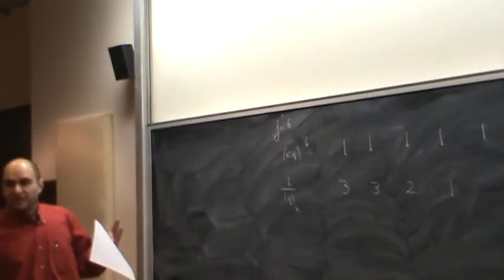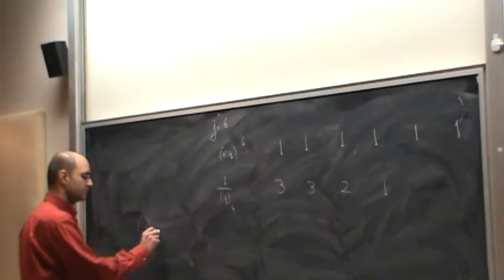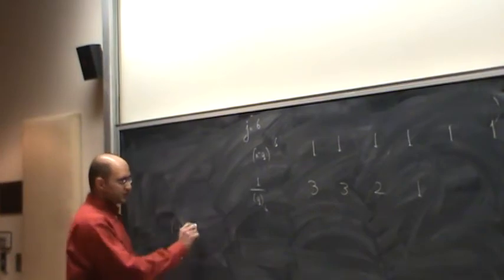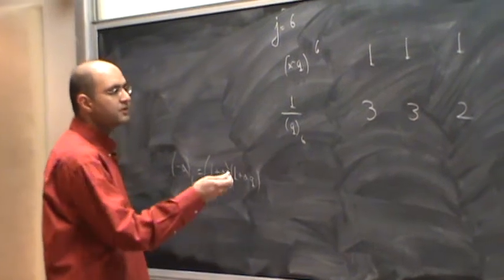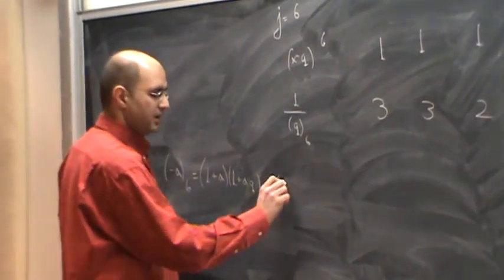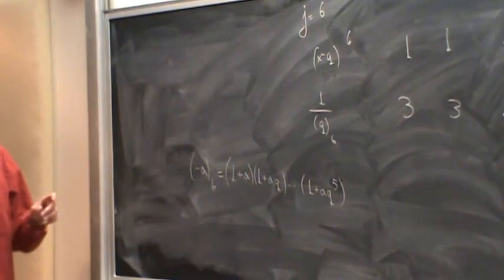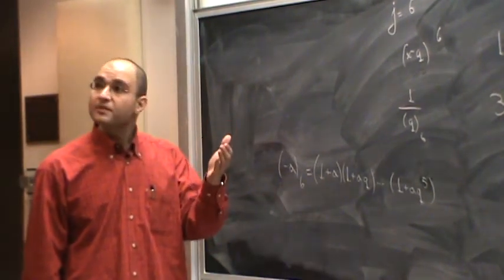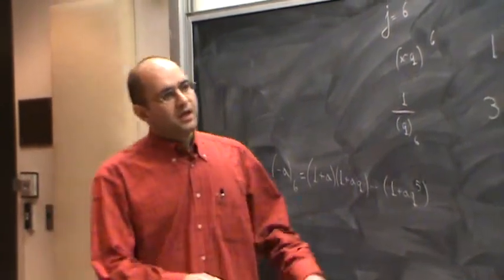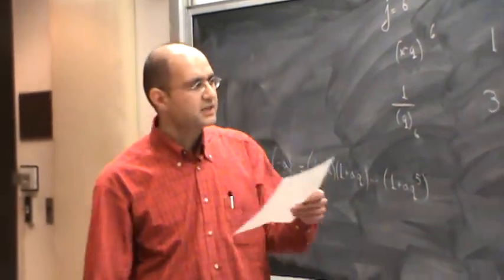And the big deal is how to interpret this minus a sub six on top. When you expand this, that's going to give you one plus a, one plus a times q squared, up to one plus a times q squared. There are six places, and there are six factors. You can select one of the parts.